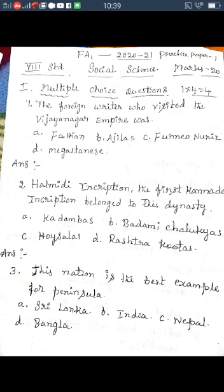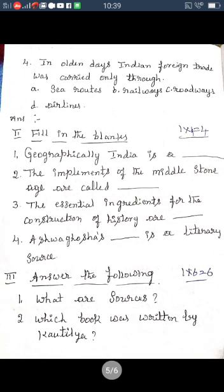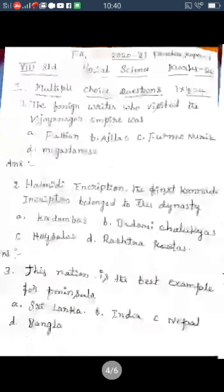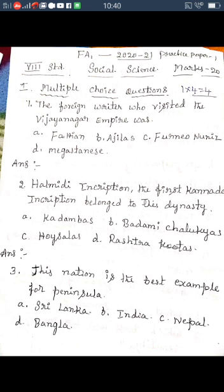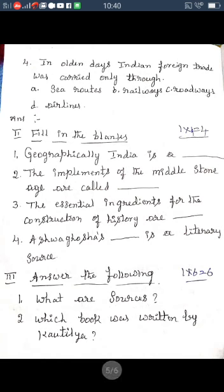The correct answer for the Halmidi inscription question is option A: Kadambas. Question three: Which nation is the best example of a peninsula? Options are Sri Lanka, India, Nepal, and Bangladesh. The correct answer is Sri Lanka. Question four: In olden days, Indian foreign trade was carried only through — answer is option C: sea route. The options were railways, roadways, and airlines.